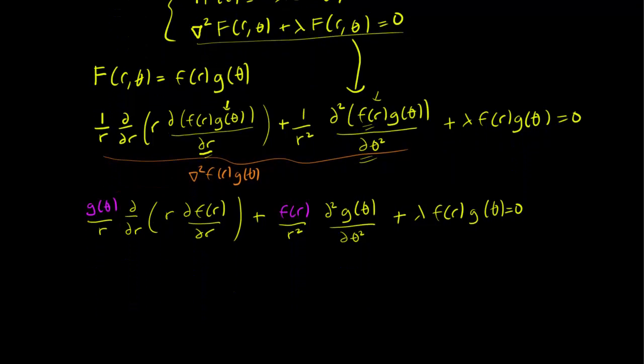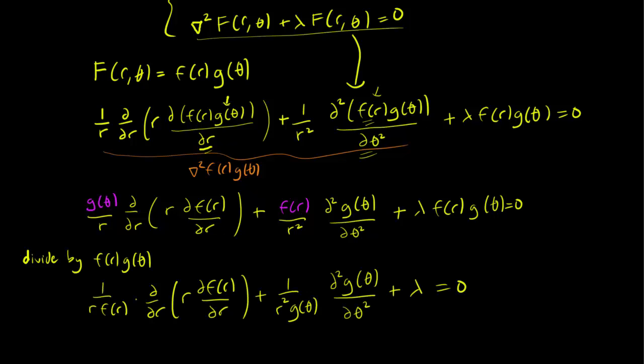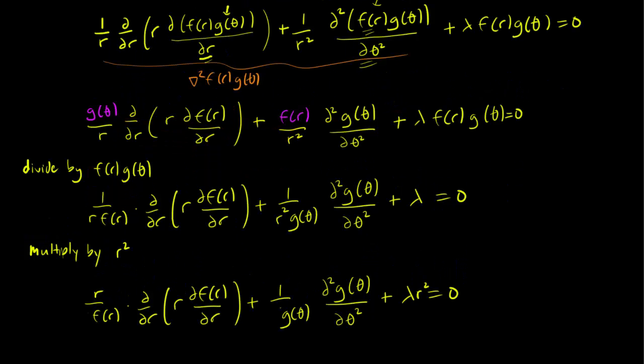Next we divide both sides by f(r)g(θ). Then we multiply both sides by r². This gives an r term in the numerator of the first term, eliminates the r² in the denominator of the second term, and gives λr² in the third term.